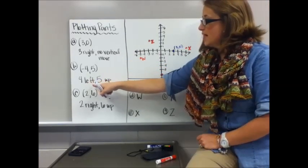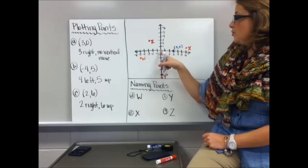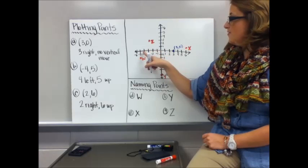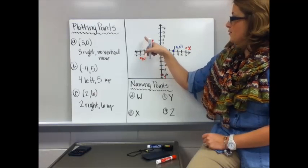For B, negative four, five. You're going to go four to the left and five up. Start at the origin, four to the left. One, two, three, four. And up five. One, two, three, four, five.